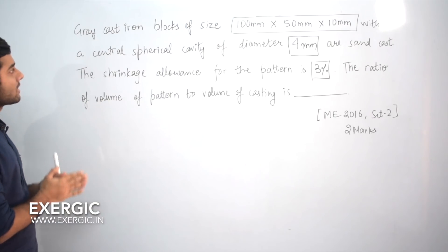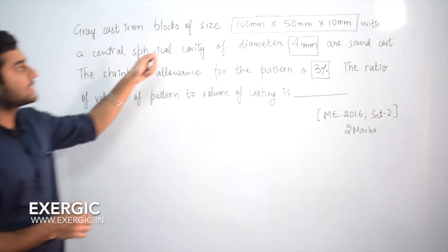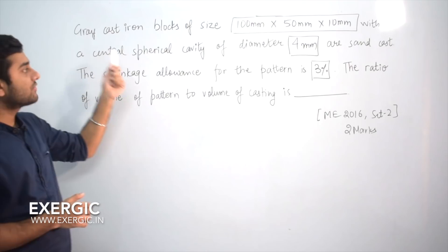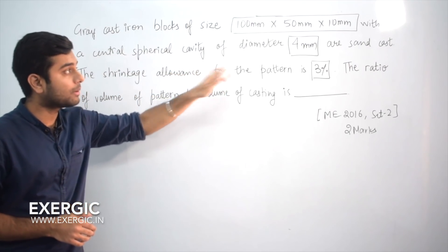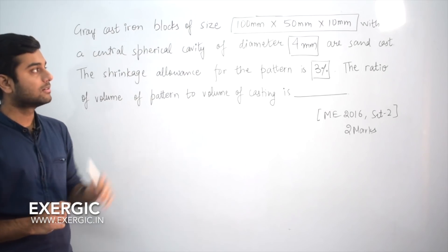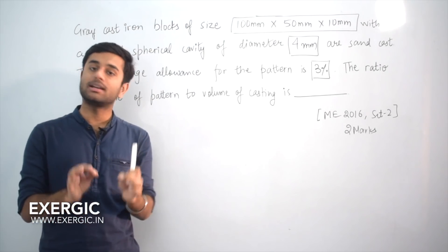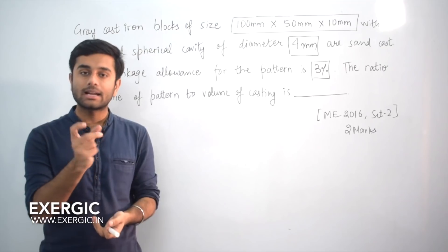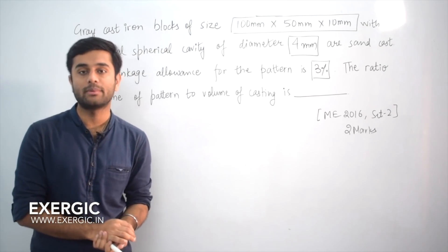So let's go through it first. Grey cast iron blocks of this size with a central spherical cavity of diameter 4mm are sand cast. We have a cuboid of given dimension - the dimension we finally want in the casting - and it has a central cavity, central hollow section of diameter 4mm.